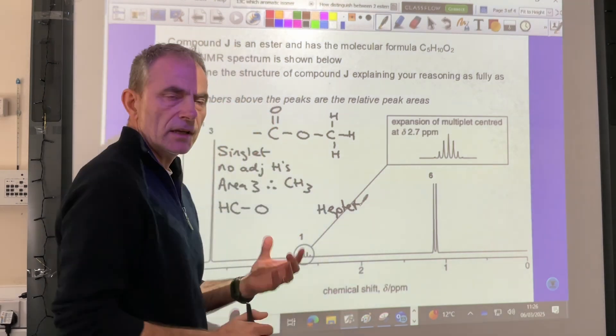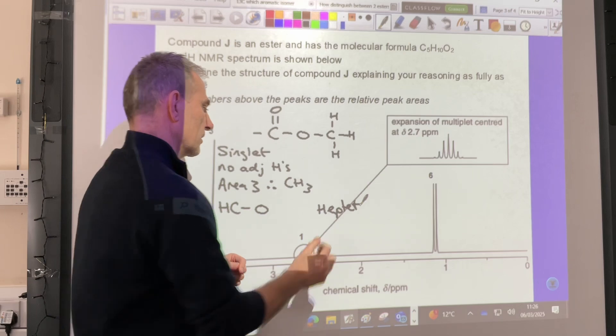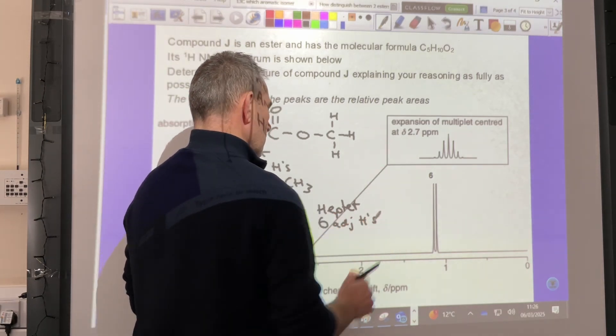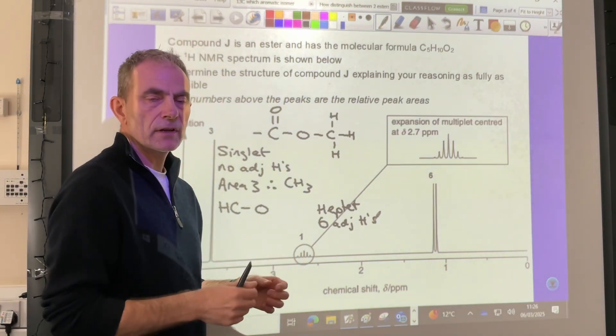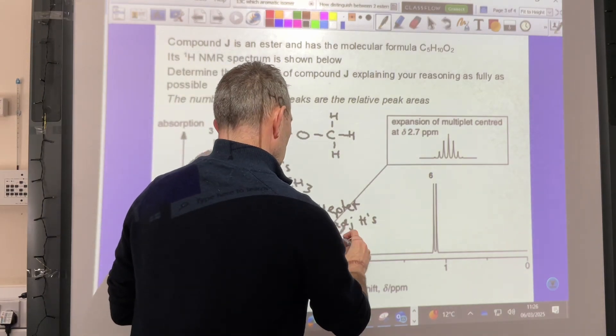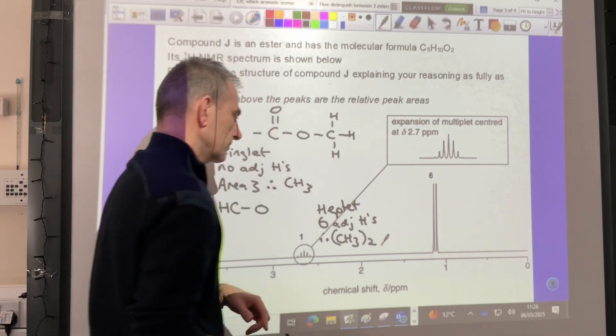So what does that mean? It means there are 6 adjacent protons. So 6 adjacent protons, so you can't have a CH6, can you? So that must be 2 equivalent CH3s. Therefore, CH3 twice.